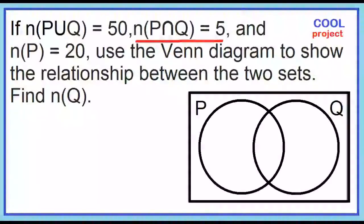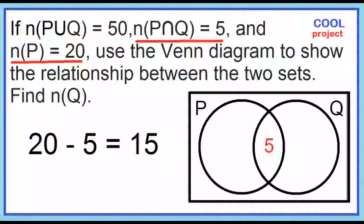Let's start with the intersection of P and Q. Place 5 in the area where P and Q overlap. Since we already have 5 in circle P and the number of elements of set P is 20, 20 minus 5 is 15.